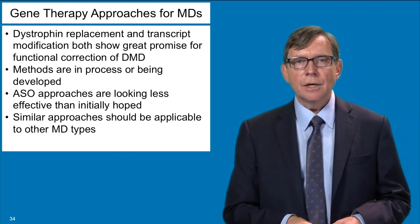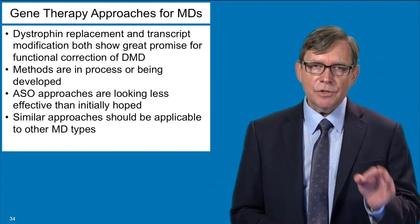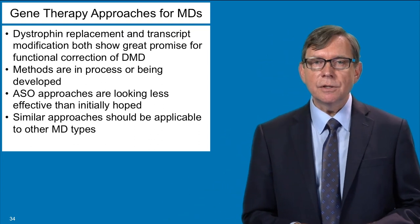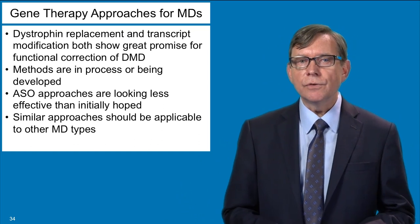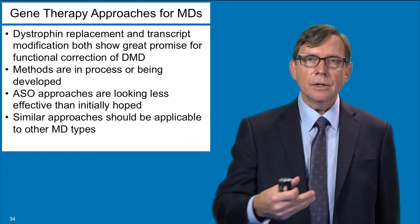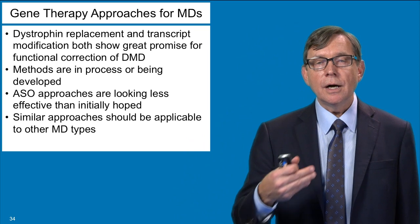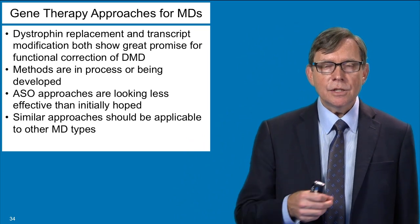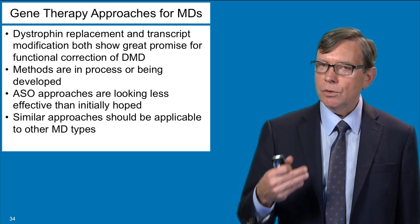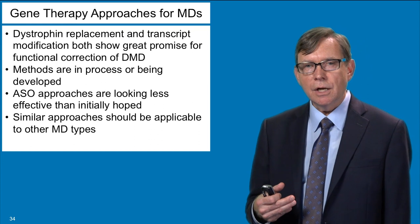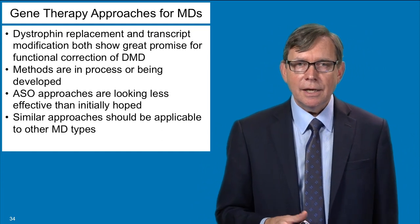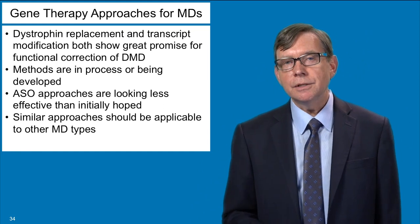What I've hopefully shown you today is that there's a variety of gene therapy approaches for the muscular dystrophies. I've emphasized Duchenne muscular dystrophy, but these general approaches can probably be applied to many of the other different types of muscular dystrophy. What we know so far is that both dystrophin replacement and transcript modification are showing a lot of promise for leading to a functional correction of Duchenne muscular dystrophy by allowing for increased production of either a normal or a highly functional version of the dystrophin protein. Methods to do this are actively being developed in a variety of laboratories and are being prepared for clinical trials. Some of these approaches are already in clinical trials — particularly the ASO or antisense oligonucleotide approaches are currently being tested in the clinic. The gene therapy methods per se are moving rapidly towards clinical application, and if they work successfully, we're going to see them being applied to many other forms of muscular dystrophy.